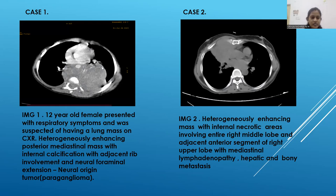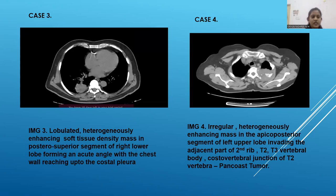Case 1: A 12-year-old female presented with respiratory symptoms and was suspected of having a lung mass on chest x-ray. It shows a heterogeneously enhancing posterior mediastinal mass with internal calcification, adjacent rib involvement, and neural foraminal extension indicating a neural origin tumor, diagnosed as paraganglioma. Case 2 shows an image of a heterogeneously enhancing mass with internal necrotic areas involving the entire right middle lobe and adjacent anterior segment of the right upper lobe, with mediastinal lymphadenopathy, and also had hepatic and bony metastasis. Case 3 shows a lobulated, heterogeneously enhancing soft tissue density mass in the posterior superior segment of the right lower lobe, forming an acute angle with the chest wall reaching up to the posterior pleura.